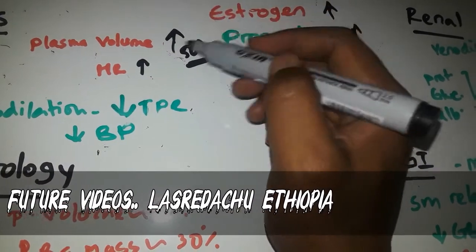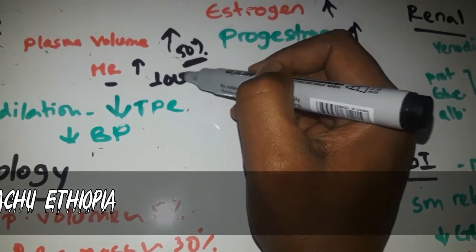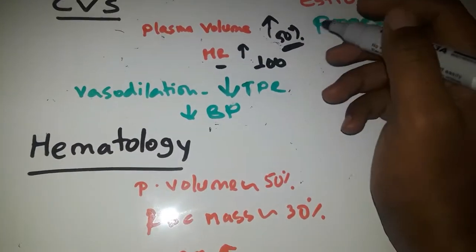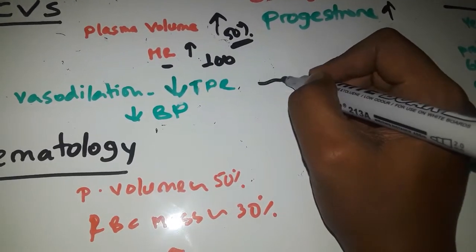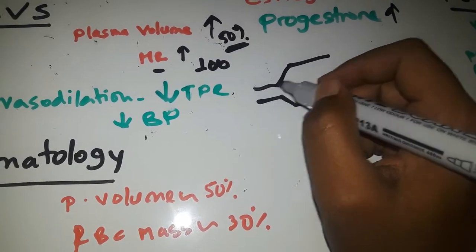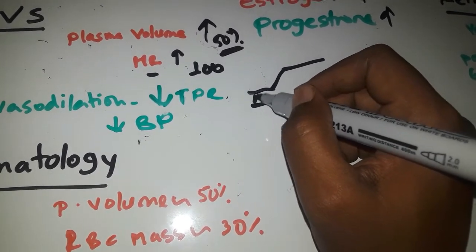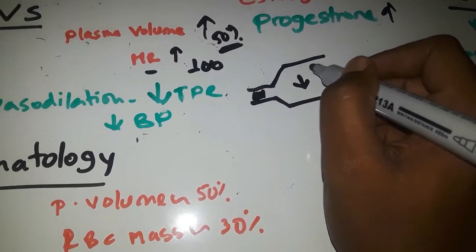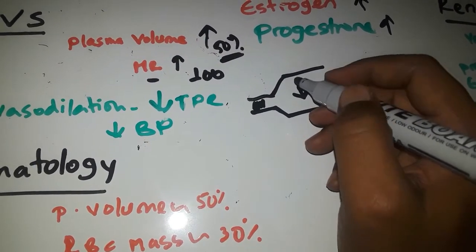Heart rate can increase up to 50%. The other change is because of progesterone. Progesterone is a vasodilator, so blood vessels will dilate in pregnancy. When blood vessels dilate, the total peripheral resistance will decrease because of the progesterone effect.